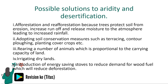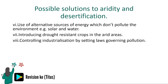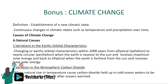Possible solutions to aridity include: afforestation and reforestation, because trees protect soil from erosion, reduce runoff, and release moisture to the atmosphere increasing rainfall; adopting soil conservation measures such as terracing, contour plowing, and planting cover crops; regulating the number of animals in proportion to the carrying capacity of the land; irrigating dry lands; and introducing energy-saving stoves to reduce demand for wood fuel and thereby reduce deforestation.